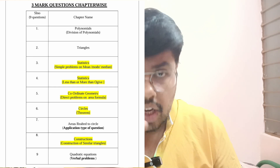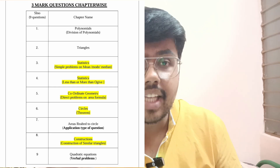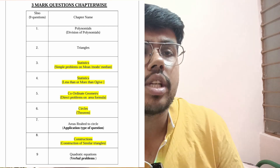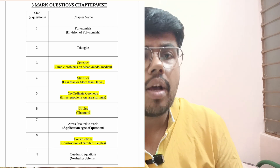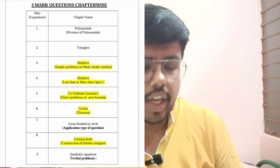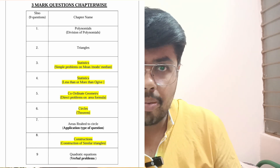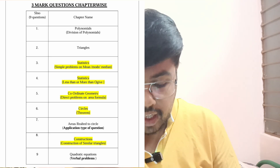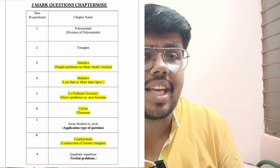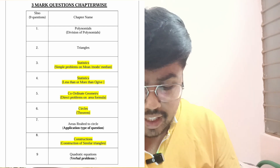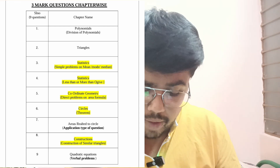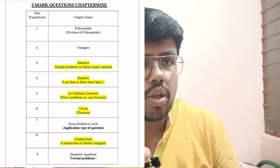Coming to three marks: confirmed questions — Statistics: mode, mean, and median. Better to know any two; my preference is mode because it is faster. Then OGIVE — more than or less than OGIVE. Next, circles theorem confirmed. Then construction. So four questions are easy — they are the passing package. Statistics again: mean, mode, median. OGIVE. Circle theorem and construction. These four are an easy get-through, giving 12 marks easily.